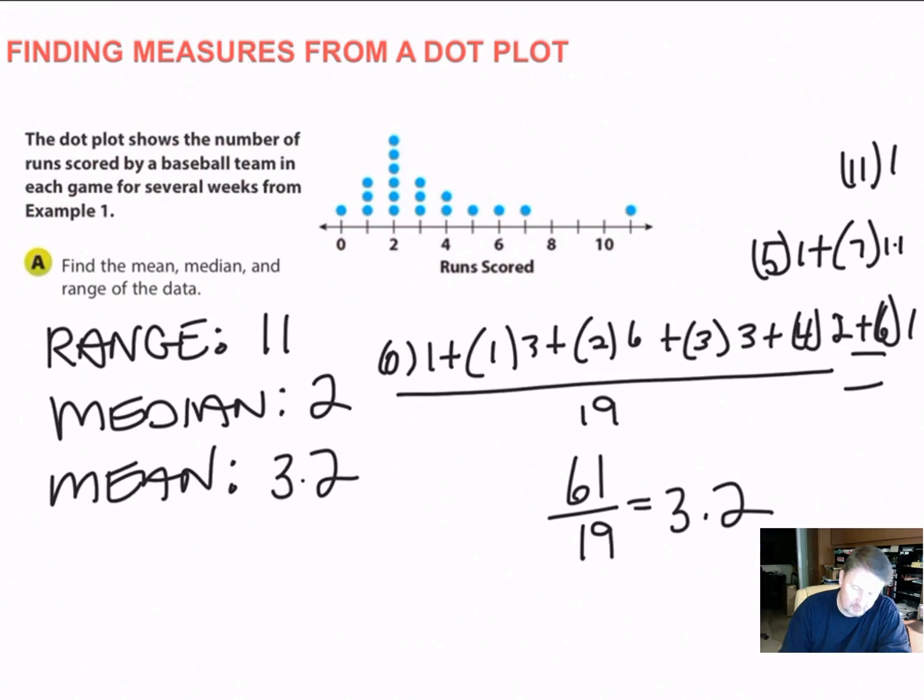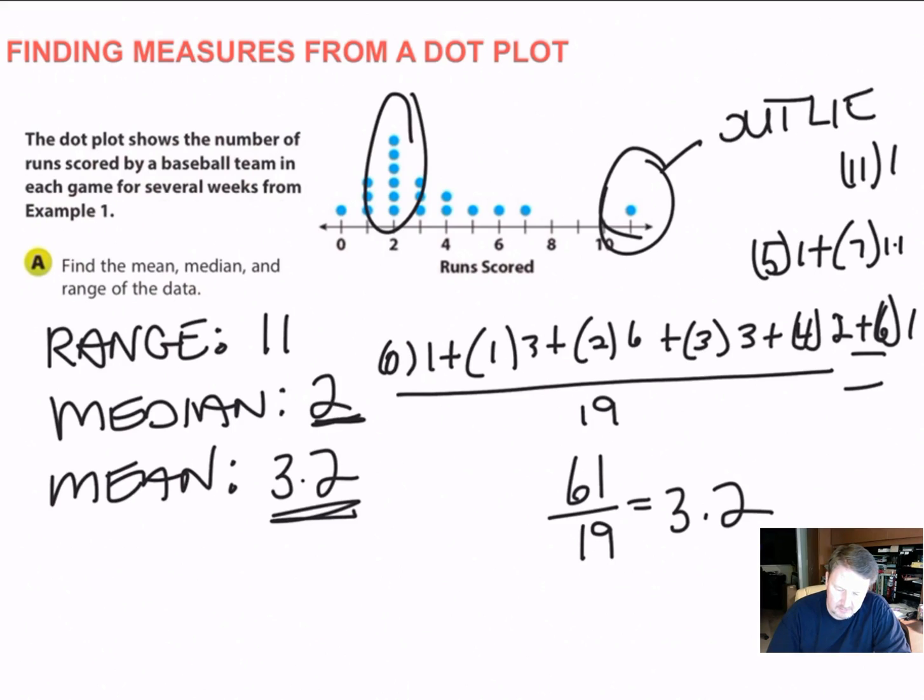All right, so my mean of the data is 3.2. And I have a sneaky suspicion that that outlier right there is the reason why my mean is higher than my median. Because clearly we scored a lot more two-run games than we did anything else. So the median is 2, and we got the range, and that's pretty much it. So what you have to do now is just kind of identify what's going on here. So we have a range of 11. We scored a range of 11 different scores. The median is 2, so on average, the median score was 2 runs per game. But the mean was 3.2. So that just tells me that that outlier is pulling the mean.